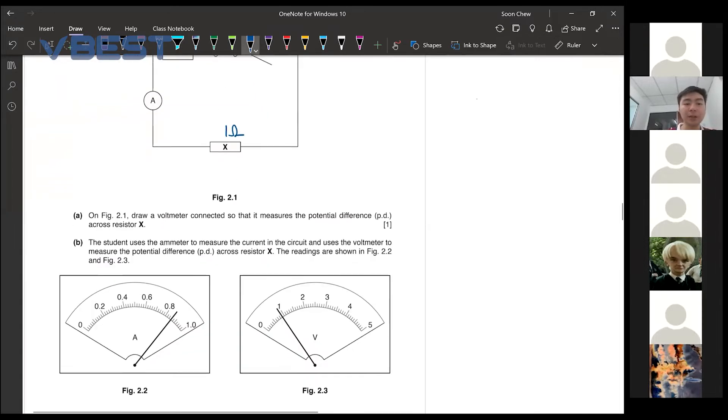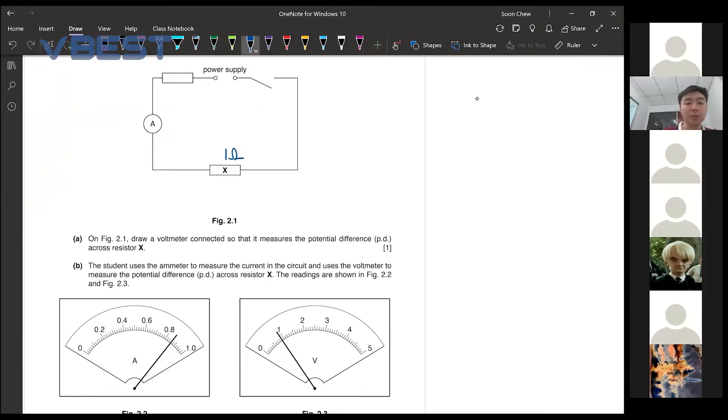So on the figure, draw a voltmeter connected so that it measures the potential difference. Now for your voltmeter, we always connect it in parallel to whatever you are trying to measure. So it will be measured in this way.